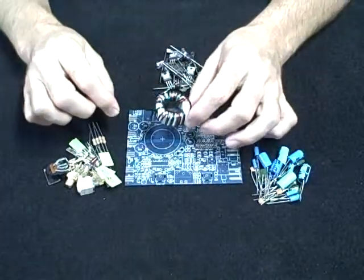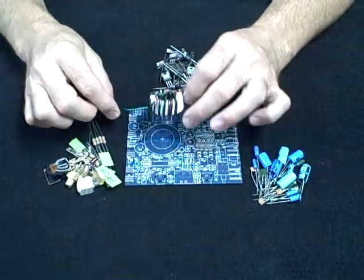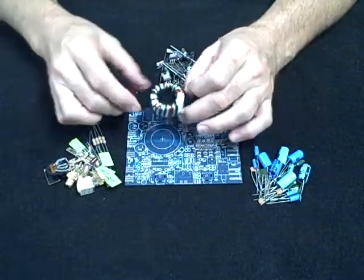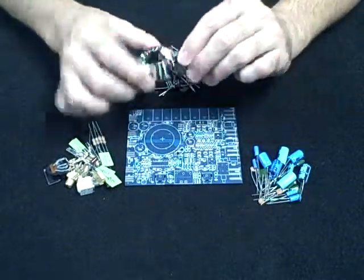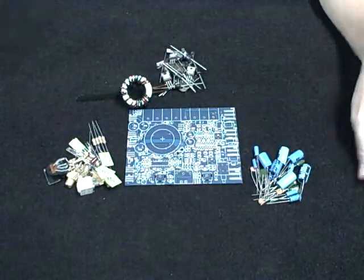Also comes with this handy dandy hand wound toroid. These are a little harder to wind than you would think, but that also comes in there with it.